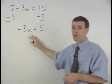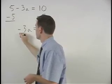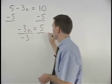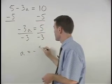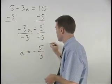To get a by itself, we would then divide both sides by negative 3, and we have a equals negative 5 thirds.